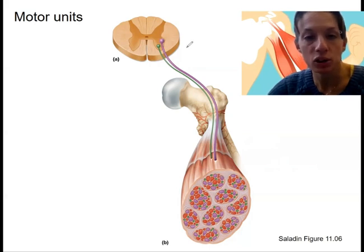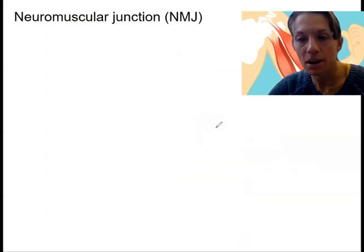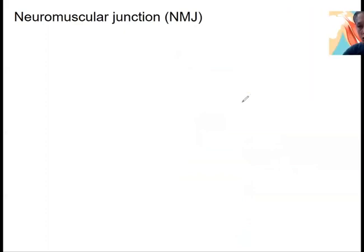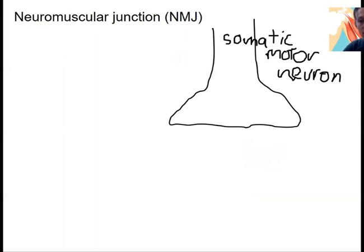We're going to be zooming in to the action of one of these neurons at the muscle cell — that neuromuscular junction. Inside the synaptic terminal of a somatic motor neuron, this is what we're drawing. The somatic nervous system talks to skeletal muscle.